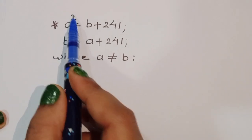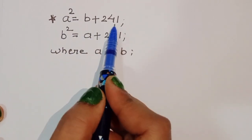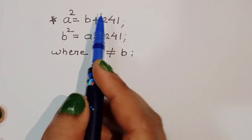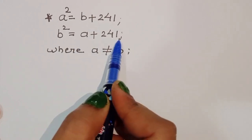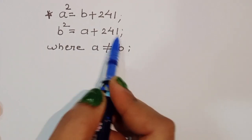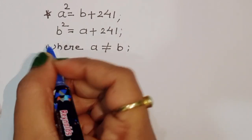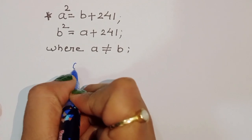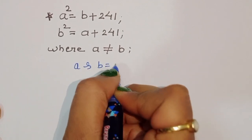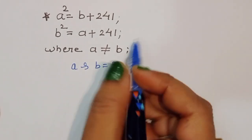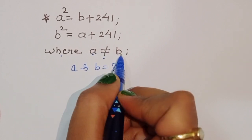The question gives us: A squared equals B plus 241, and B squared equals A plus 241. We need to find the values of A and B, where the condition is given that A is not equal to B.